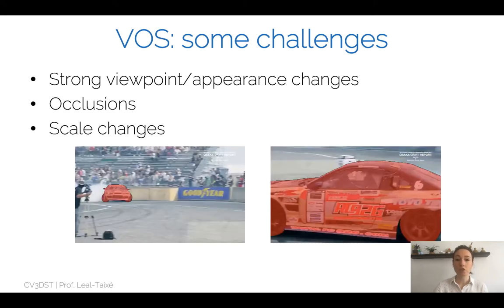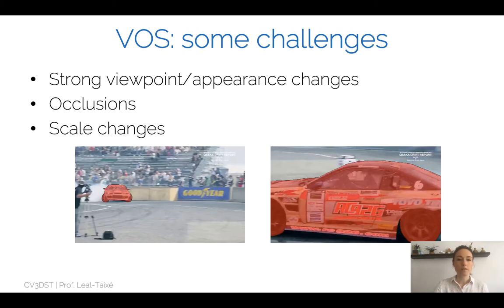Finally, we have scale changes — one of the biggest challenges, and one we rarely see in multiple object tracking benchmarks. This is when the car starts far away from the camera, then becomes closer and closer until it fills pretty much all the frame. Here we have both viewpoint changes and really large scale changes. If you try to apply any type of consistency measure from one frame to the other, these kinds of problems are going to be your biggest challenge.